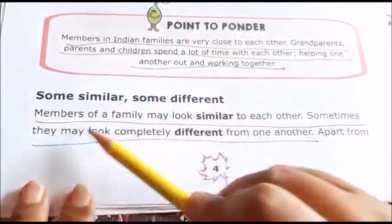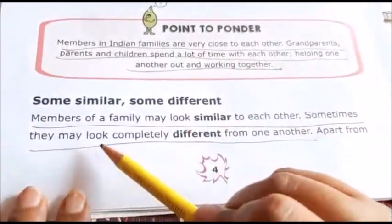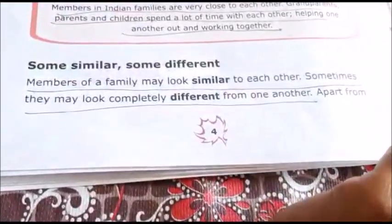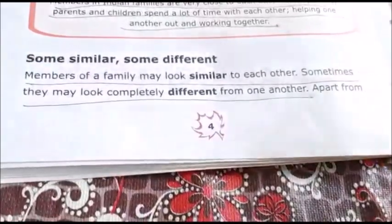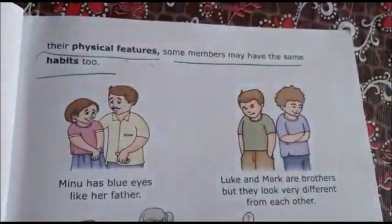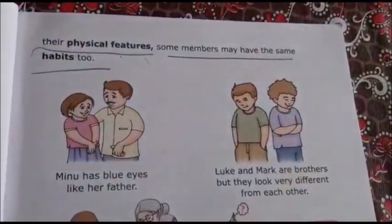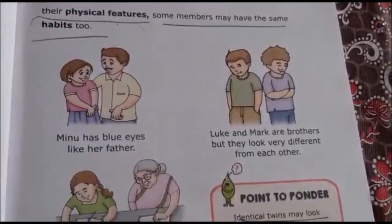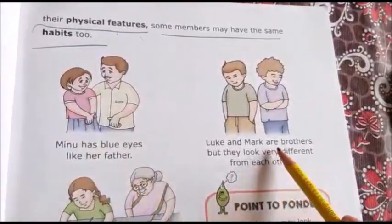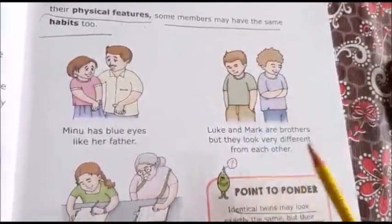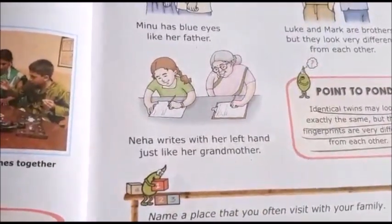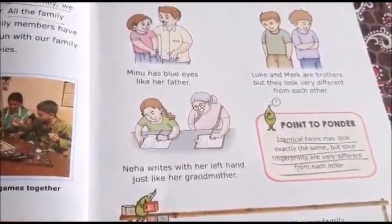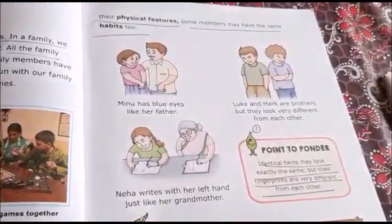Some similar, some different — members of a family may look similar to each other, but sometimes they may look completely different from one another. Apart from physical features, some members may also have the same habits. For example, Meenu has blue eyes like her father; Luke and Mark are brothers but look very different from each other; and Neha writes with her left hand just like her grandmother. So it is not necessary that only physical features match — habits can also match with other family members.